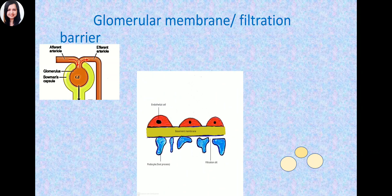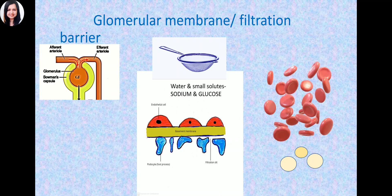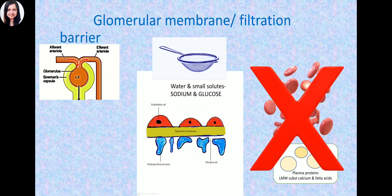All plasma — including water and small solutes — passes through. The glomerular membrane acts like a sieve, similar to a kitchen sieve used to filter tea particles. Water, small solutes, sodium, and glucose all pass through. But will RBCs pass? What about plasma proteins, low molecular weight calcium, and fatty acids bound to plasma proteins? No, they will not pass. So this is bulk, ultra filtration — non-discriminate except for RBCs and plasma proteins.